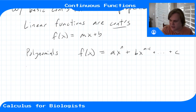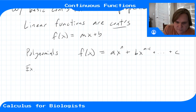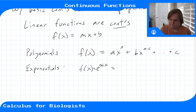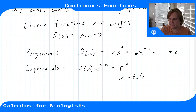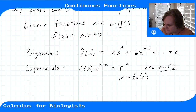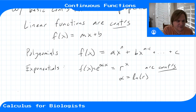Some other continuous functions include any exponential, like e to the power alpha*x, because this is the same as some r to the x where alpha equals ln(r), so any of these are continuous. Any cosine and any logarithm are also continuous. We'll stop here, and I'll have another video about when things aren't continuous.